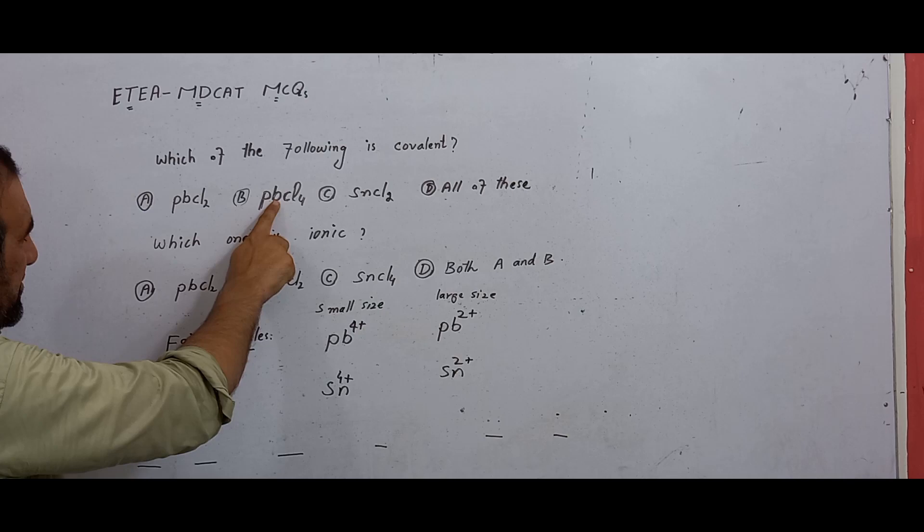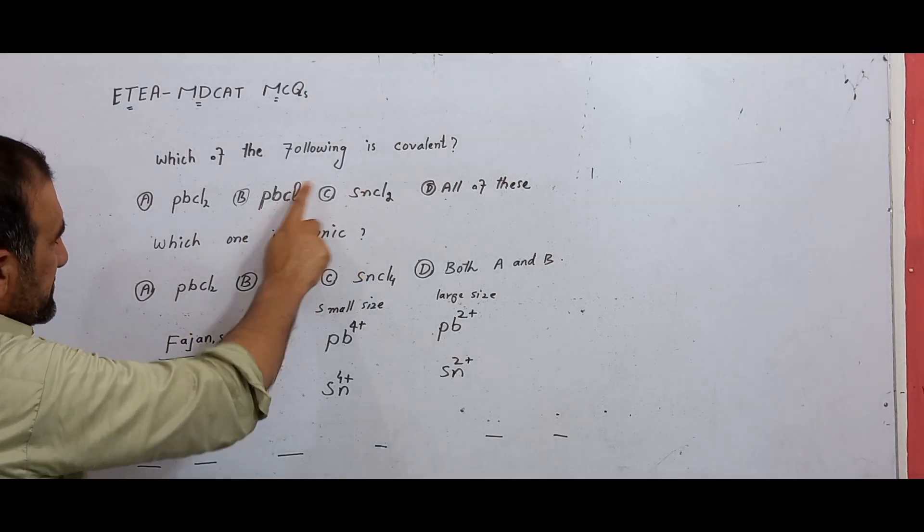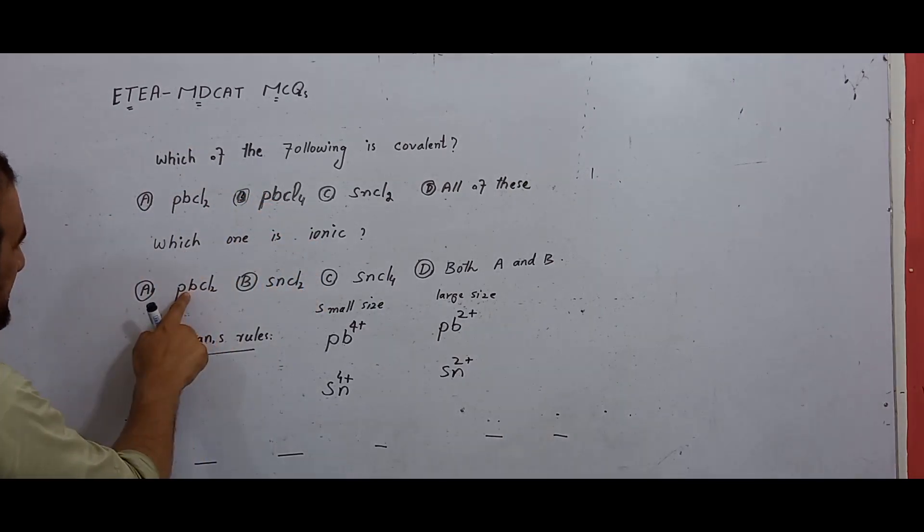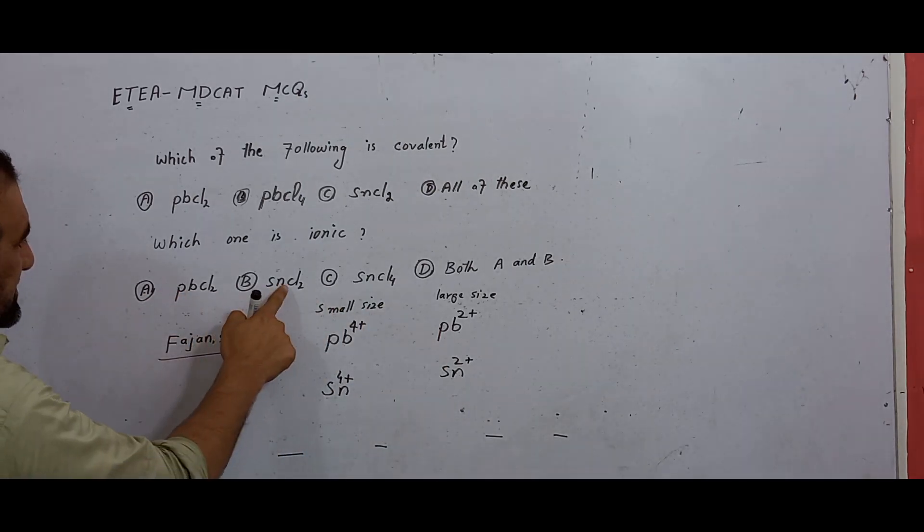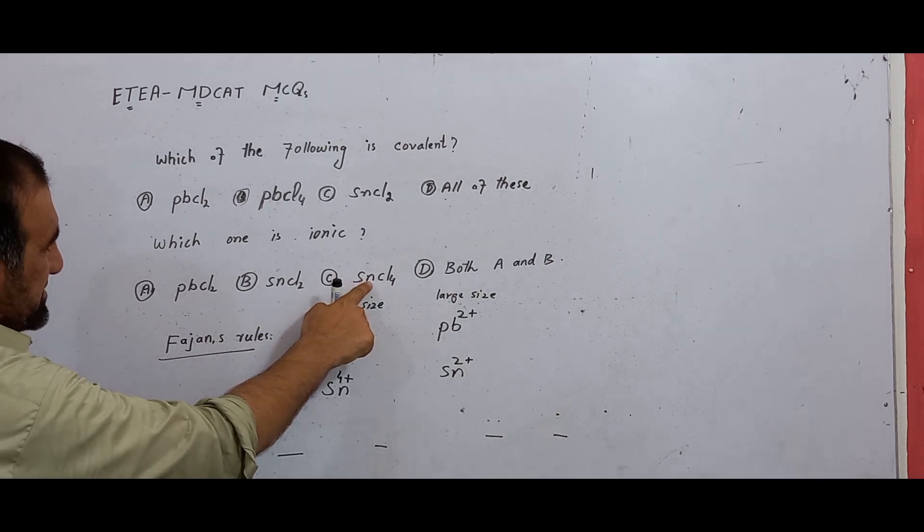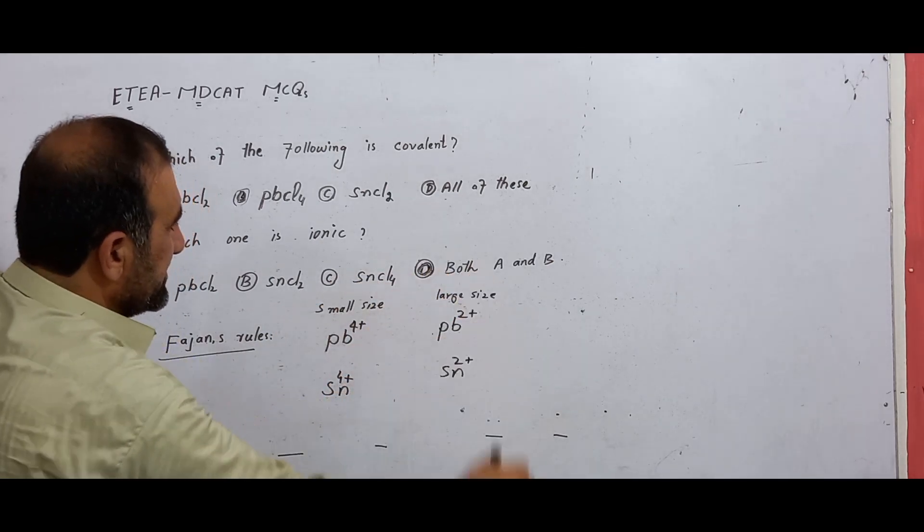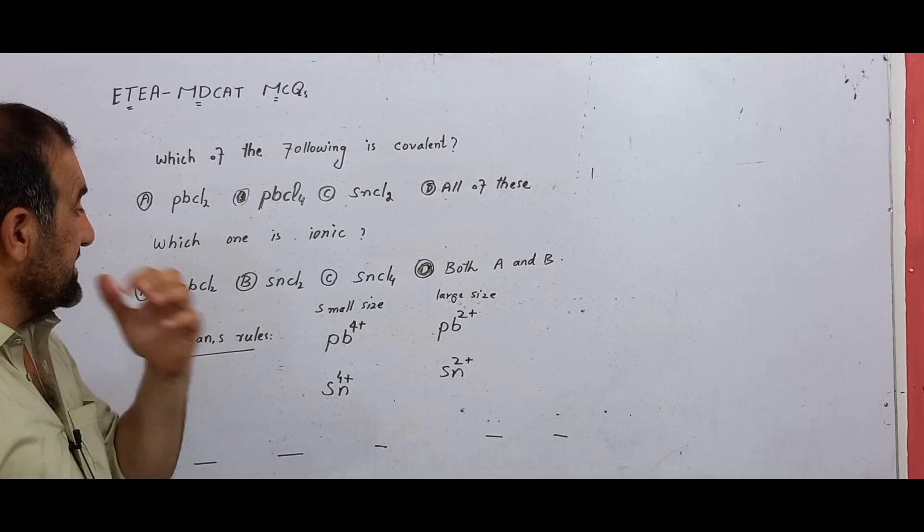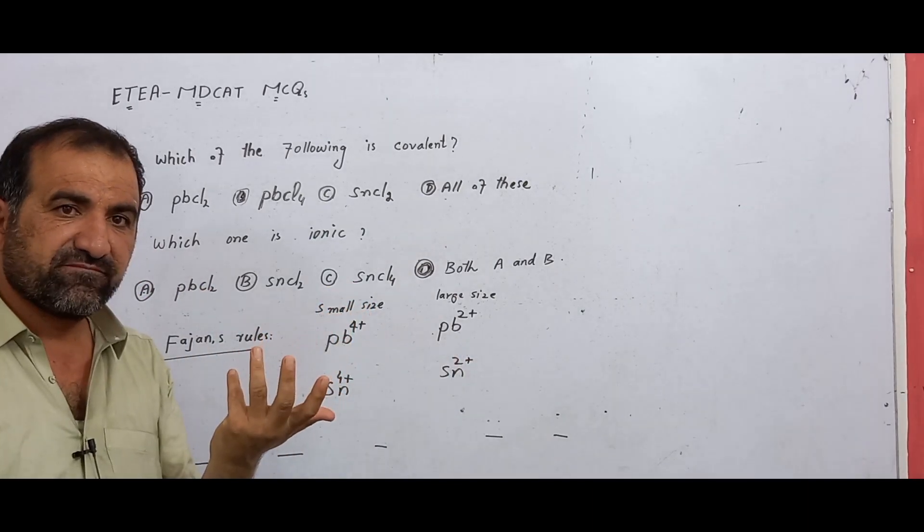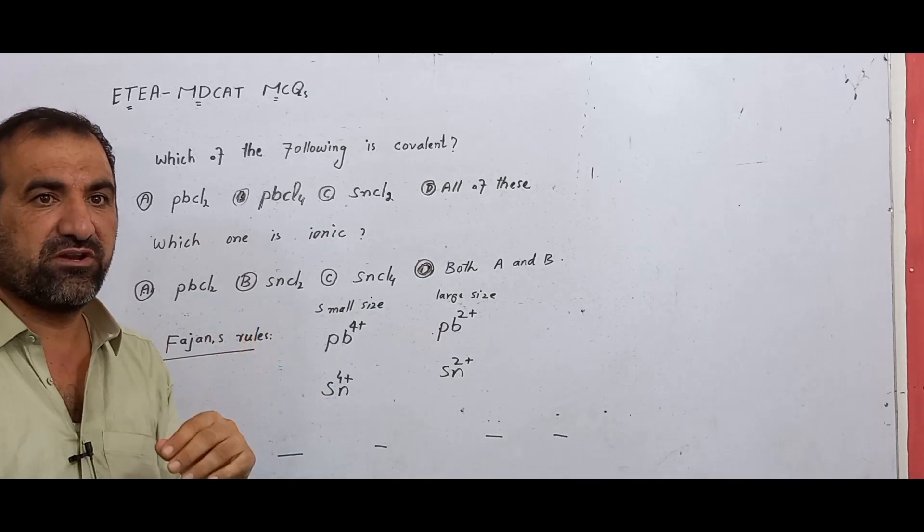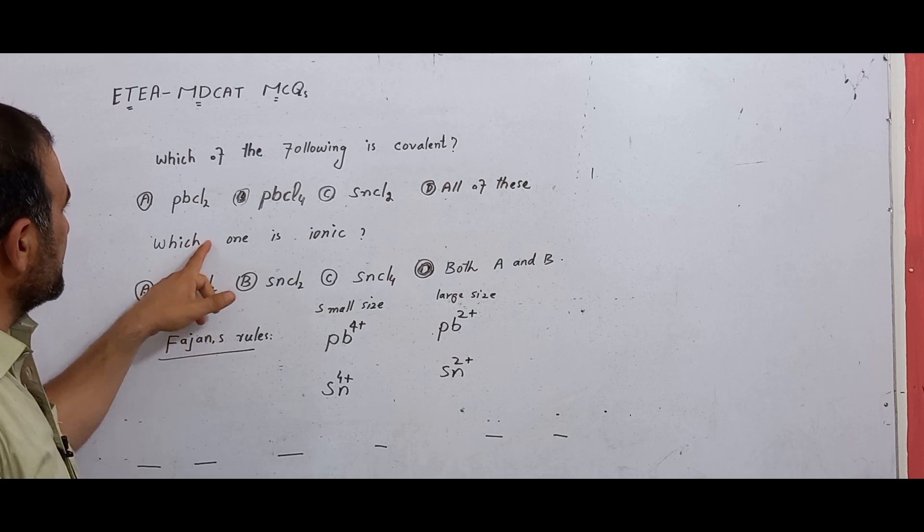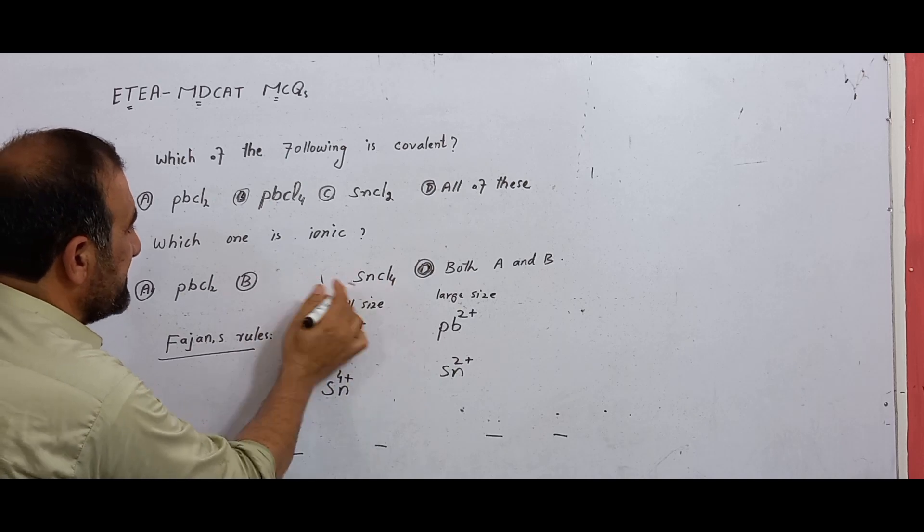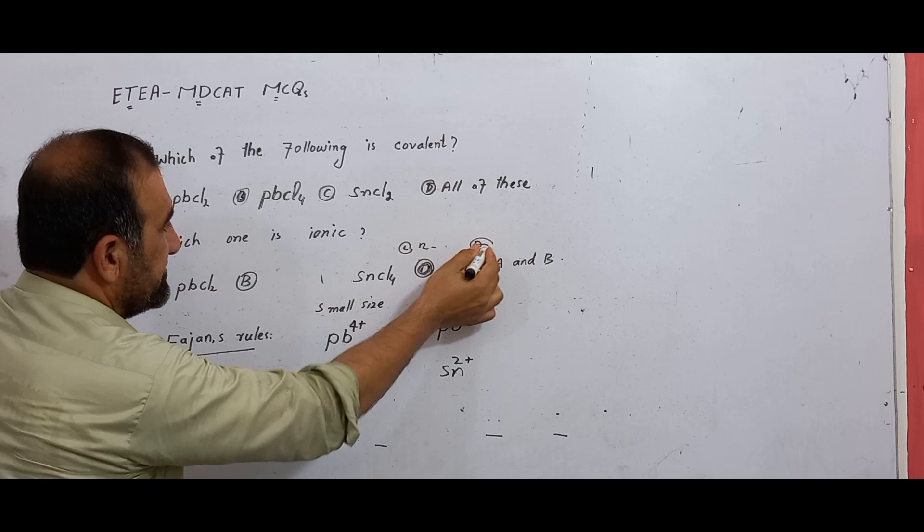Pb plus two is ionic and Pb plus four is covalent. The question asks which of the following is more stable: the oxidation state plus two or plus four for tin and lead. Both A and B option. Down the group for tin and lead.